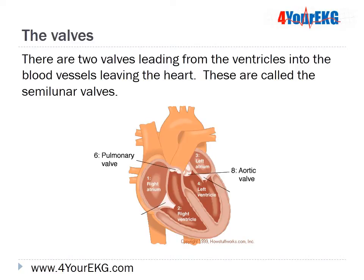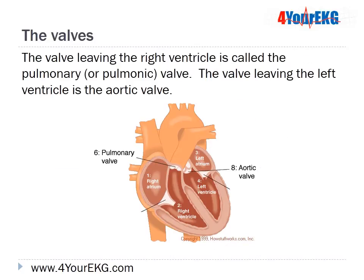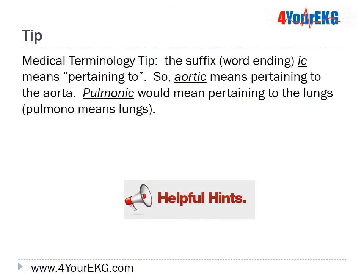There are two valves leading from the ventricles into the blood vessels leaving the heart, called the semilunar valves. 'Semilunar' means half-moon shape, describing what they look like. The valve leaving the right ventricle is called the pulmonary or pulmonic valve. The valve leaving the left ventricle is called the aortic valve. The suffix '-ic' means pertaining to, so aortic means pertaining to the aorta, and pulmonic means pertaining to the lungs.